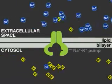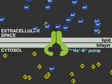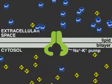Animal cells use a membrane pump, called the sodium-potassium pump, to maintain these ion gradients.